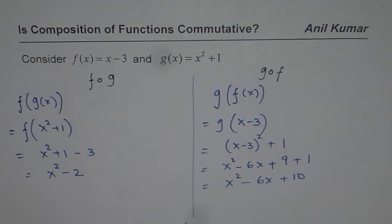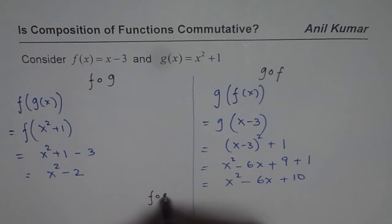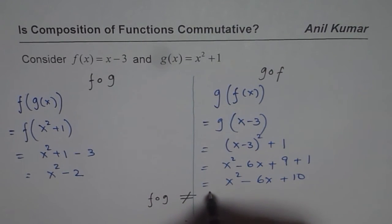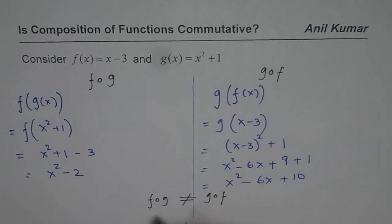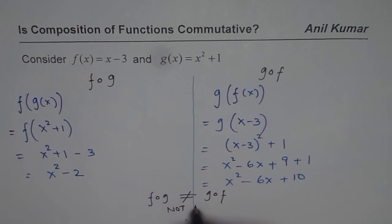Now clearly you can see that they are not equal. So what we see here is that f of g is not equal to g of f, and therefore they are not commutative.